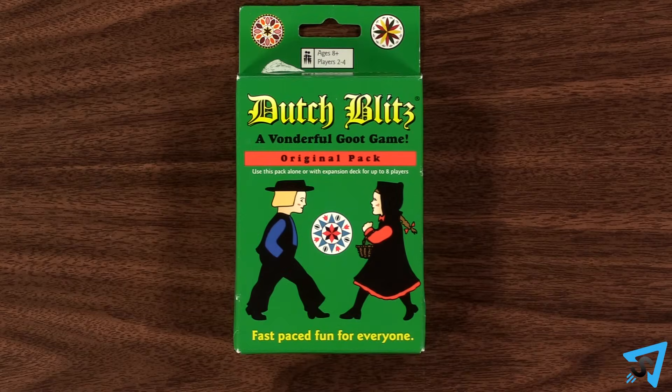Dutch Blitz, how to play. The object of the game is to be the first player to score 75 or more points.